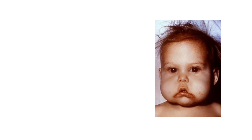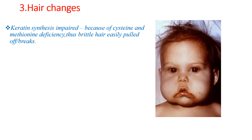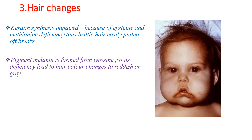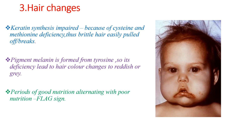Another common finding in severe acute malnutrition is hair changes, due to keratin synthesis impairment from cystine and methionine deficiency. Because of this deficiency, hair becomes brittle and easily pulled off or breaks. Pigment melanin is formed from tyrosine, which gives hair color. Tyrosine is deficient during malnutrition, leading to hair color change to reddish or gray. Alternating periods of good protein intake and poor protein intake lead to changing color of hair at different levels, called the flag sign.